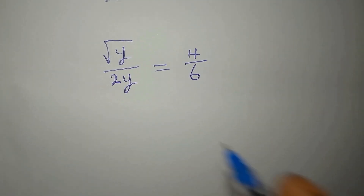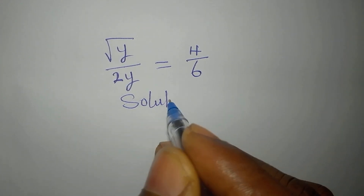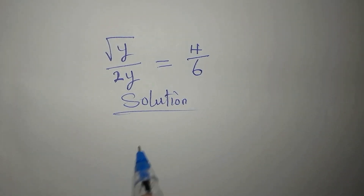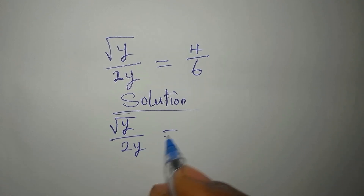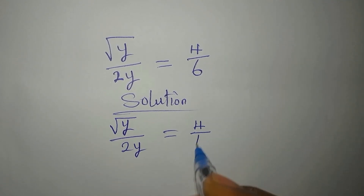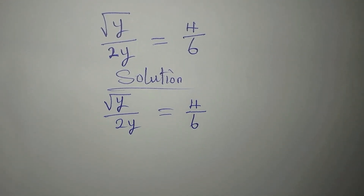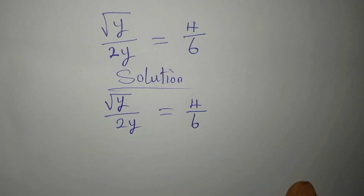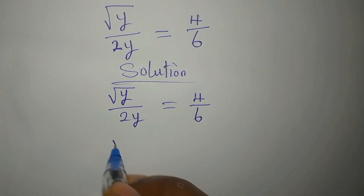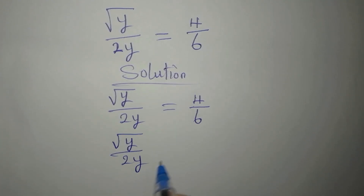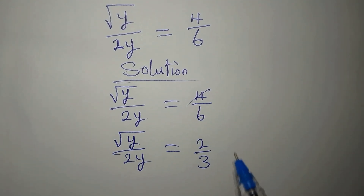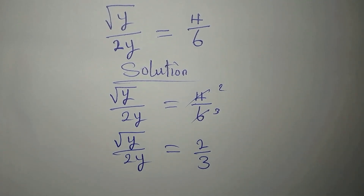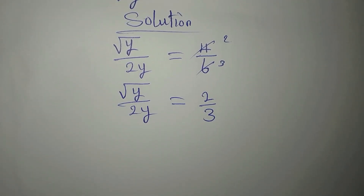Hello everyone. Let's solve this problem: square root of y over 2y equals 4 over 6. The first thing to do is reduce this fraction to a simpler term. Square root of y over 2y equals 2 over 3, because 2 goes into 4 twice and into 6 three times.